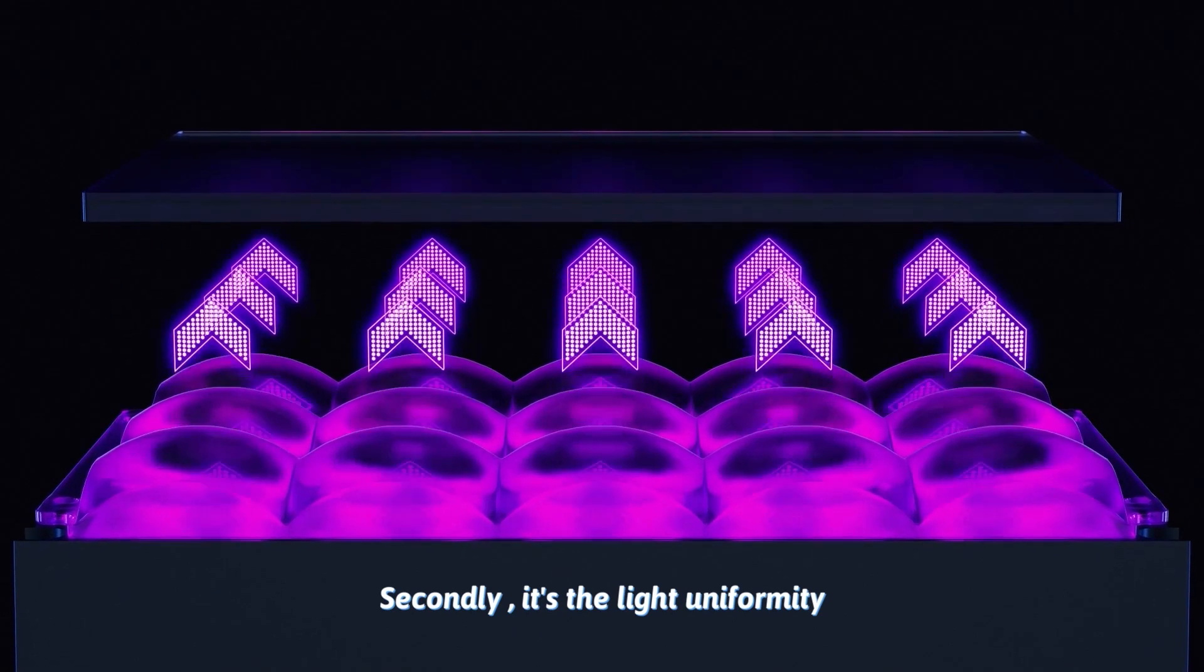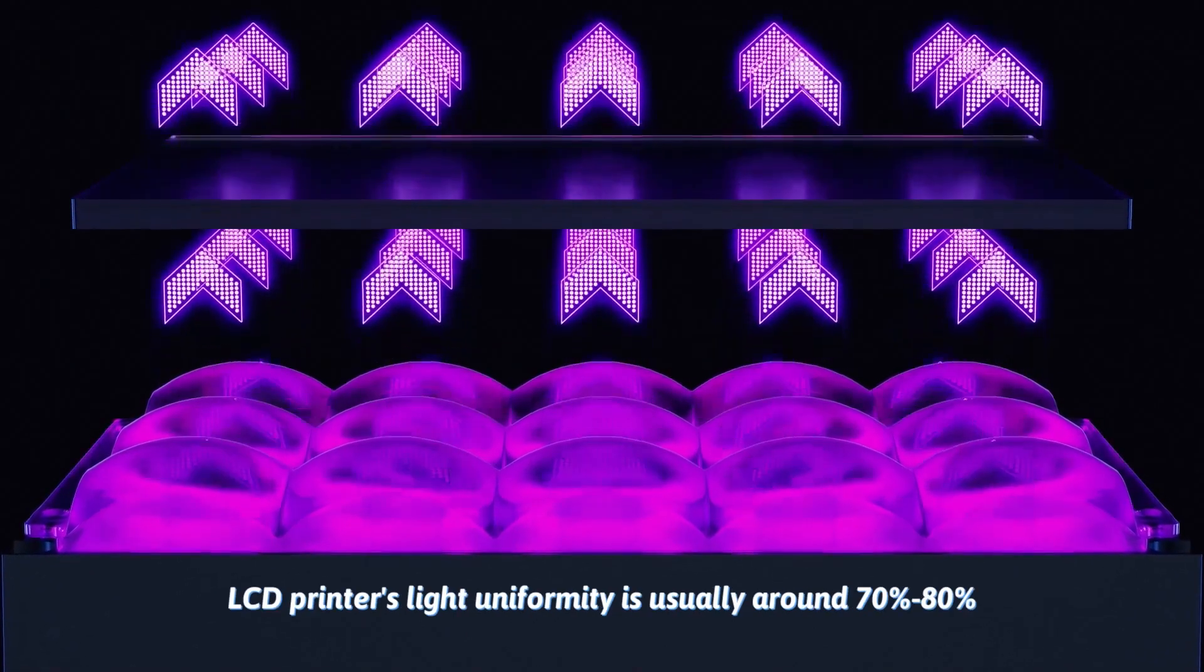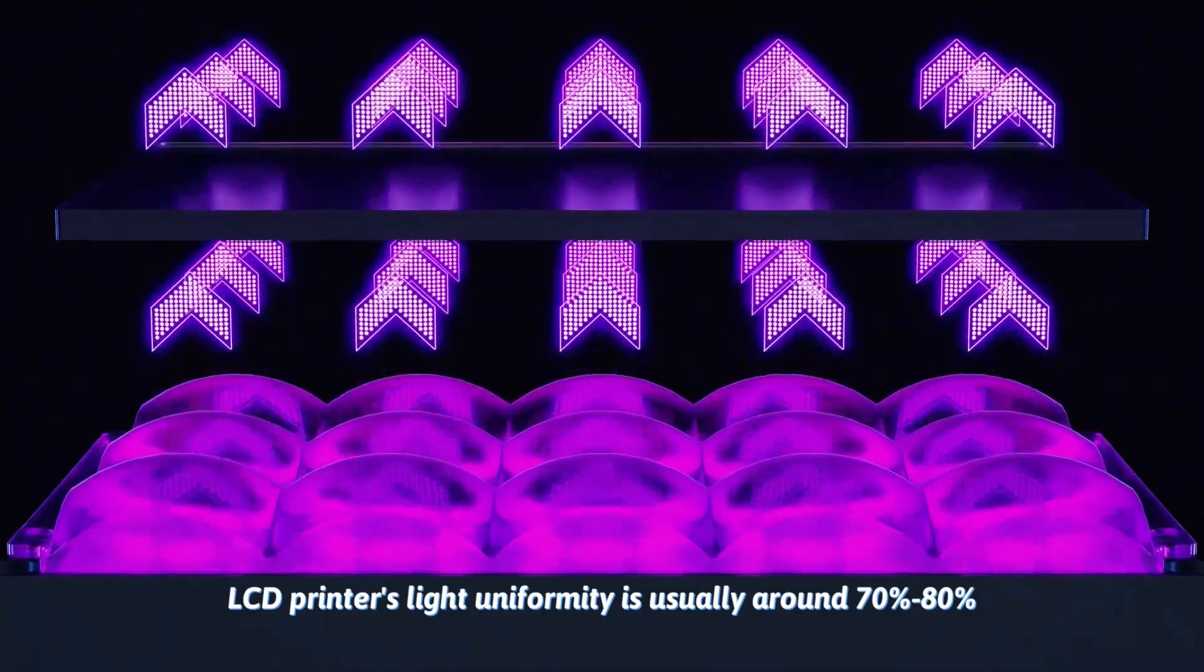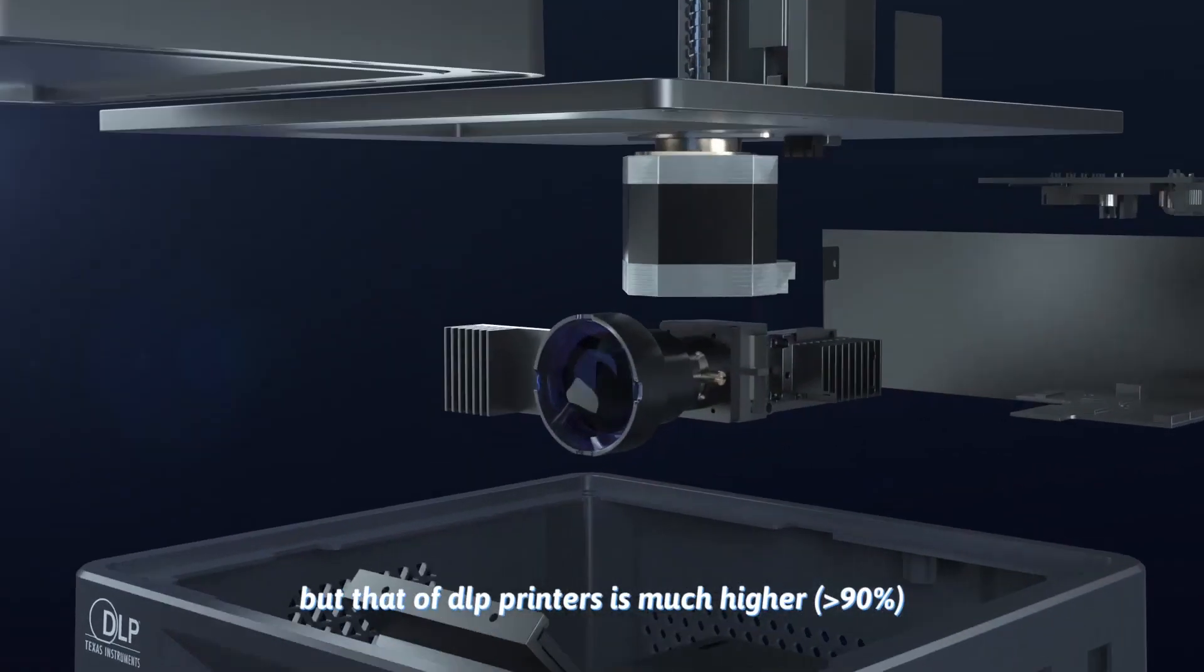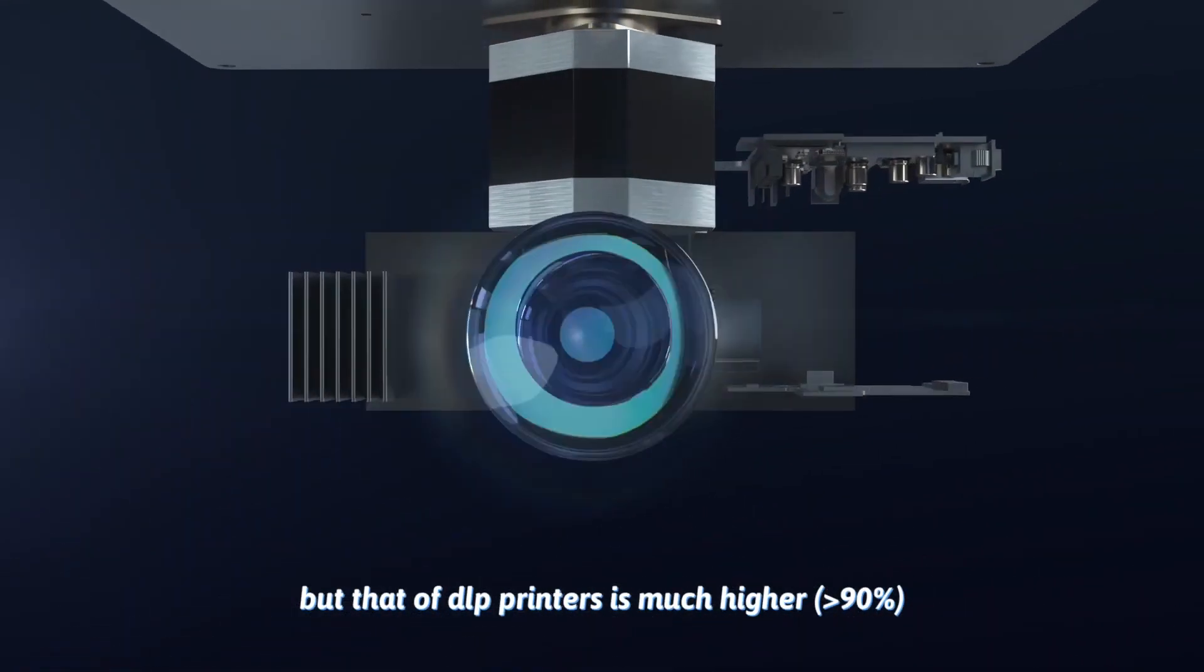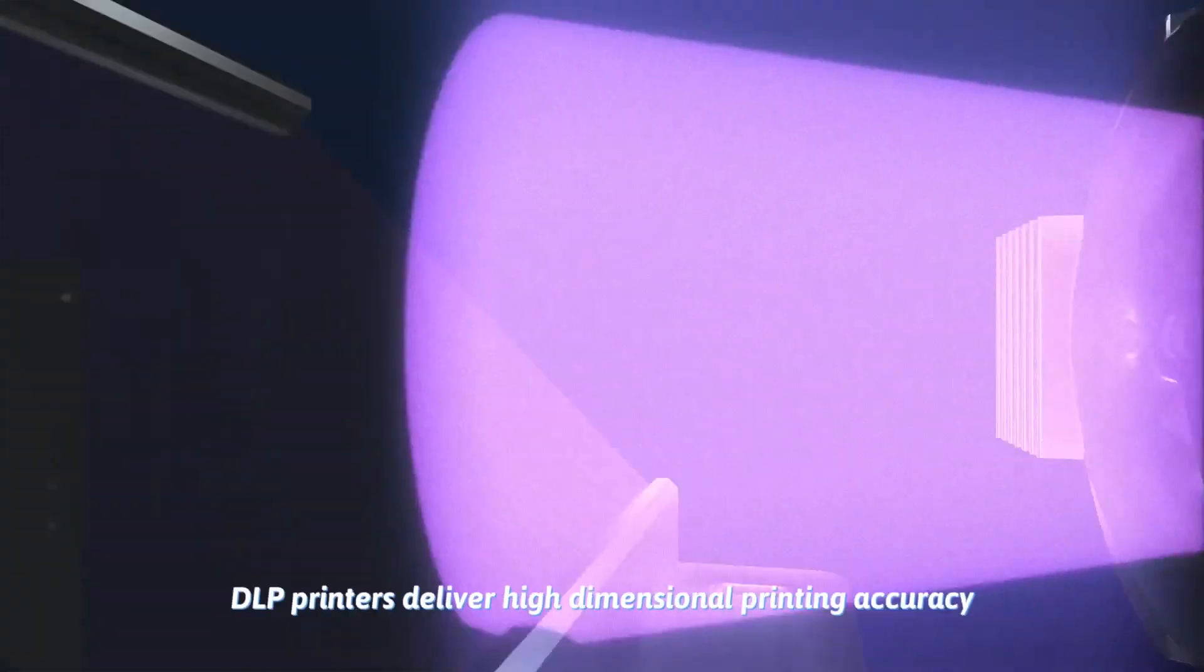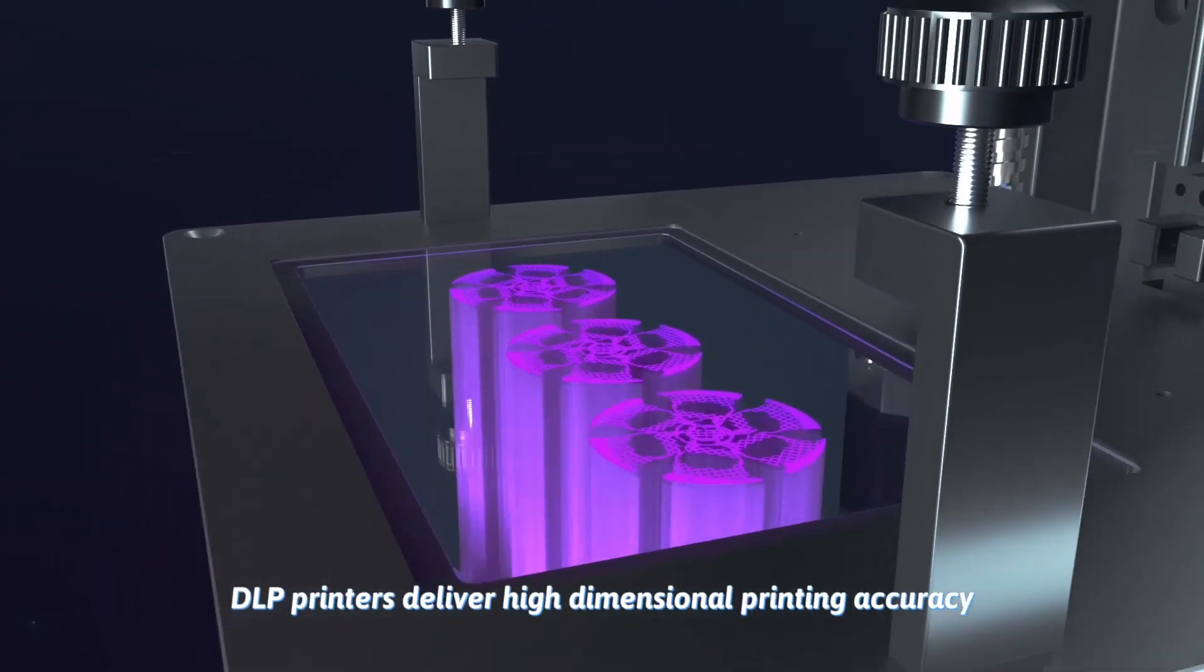Secondly, it's the light uniformity. LCD printers' light uniformity is usually around 70% to 80%, but that of DLP printers is much higher, over 90%. Therefore, DLP printers deliver high-dimensional printing accuracy.